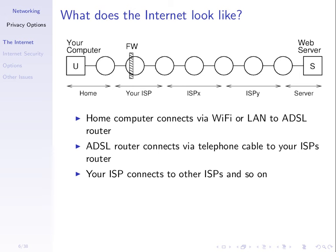One thing we'll talk about when looking at internet privacy options is the role of firewalls, and more interestingly from the user's perspective, bypassing firewalls. If there is a firewall at some point in the path between you and the server saying you cannot access that server, how can we bypass that firewall? Let's assume one of these routers — the ISP router — has a firewall, and consider what happens if it tries to block you from accessing the server.